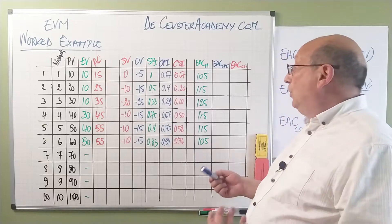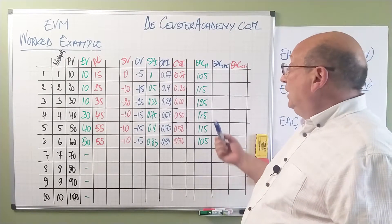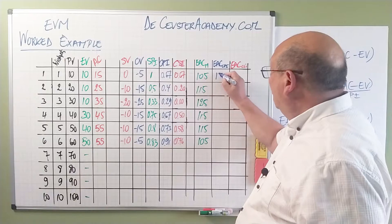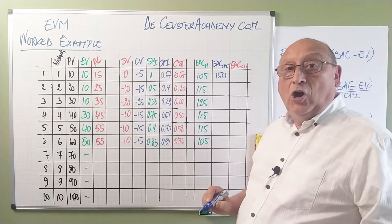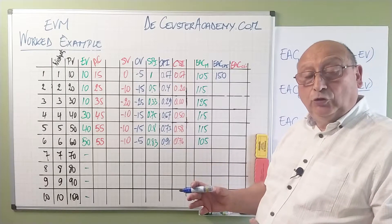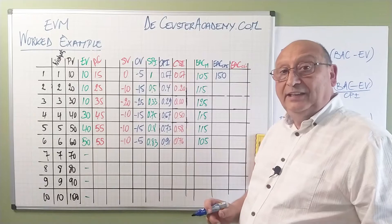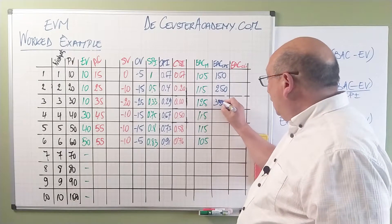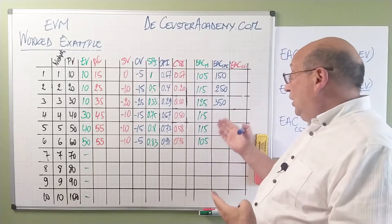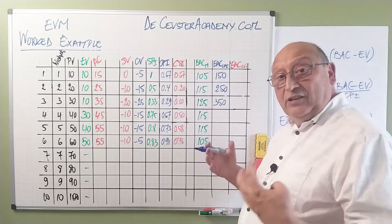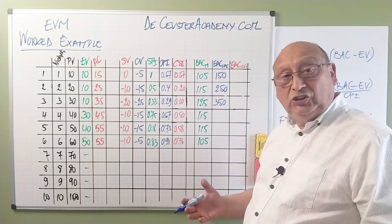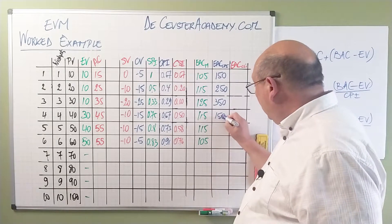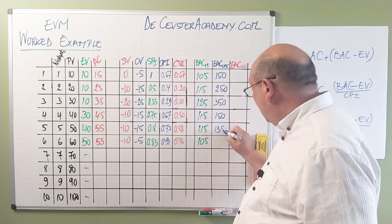Now let's see what happens when we work with the CPI. We divide the remaining part by 0.67 in the first period and find an estimate at completion of 150. The subsequent periods give 250, then 350 — it's not looking so well here because the CPI is very low. It's logical that the CPI-based estimate is rather bad. But then we improve again: 150, 138, and 110.